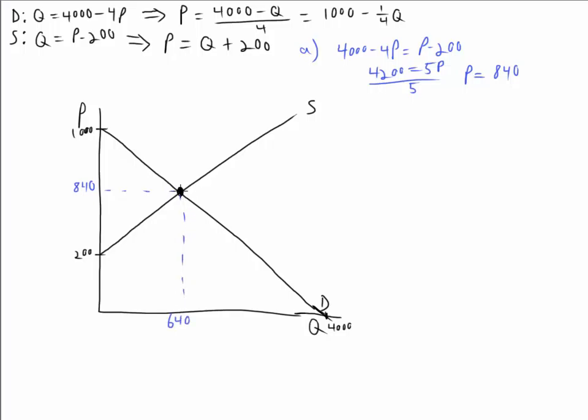For part B, we want to know what is the price elasticity of demand at the equilibrium point. So let's use the point-slope formula, and we get 1 over the slope. Well, we can see here the slope is minus one-fourth. So 1 over minus one-fourth, and you know what, I'm just going to rewrite that as negative 4, and we want to multiply that by P over Q.